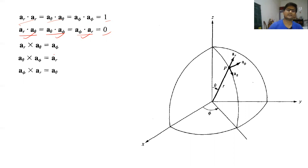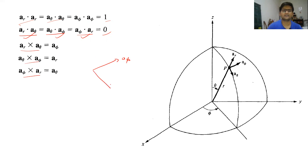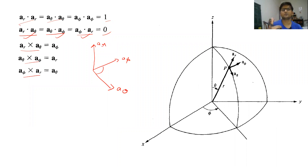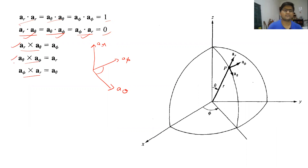Similarly, we can take the cross product. Since a_phi is in one direction, a_theta in another, and ar is normal to both, then a_theta × a_phi gives ar using the right-hand (thumb) rule. This is how you calculate the cross product between two unit vectors.